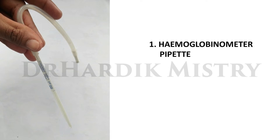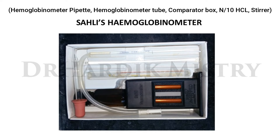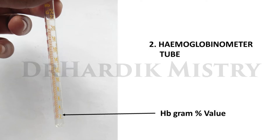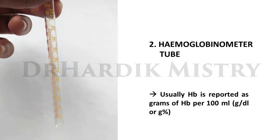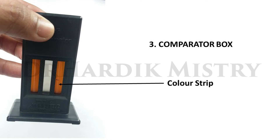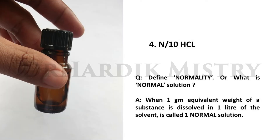Hemoglobinometer pipette: there is a 20 microliter mark on the hemoglobinometer pipette up to which we have to fill the blood. This is the Sahli's hemoglobinometer. The hemoglobinometer tube has two types of markings — one shows hemoglobin gram percentage value and another shows percentage value. Hemoglobin is usually reported as grams per 100 ml, which means grams per dL or gram percentage. There is also a comparator box with a color strip and a bottle containing N/10 HCl.